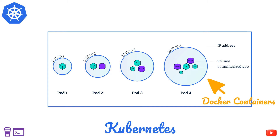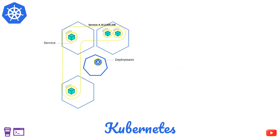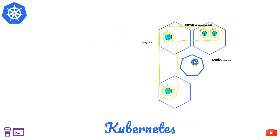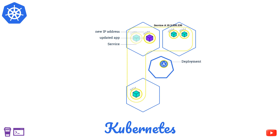Containers are a good way to bundle and run your applications. In a production environment, you need to manage the containers that run the applications and ensure that there is no downtime. For example, if a container goes down, another container needs to start. Kubernetes takes care of this and provides a framework to run distributed systems resiliently.